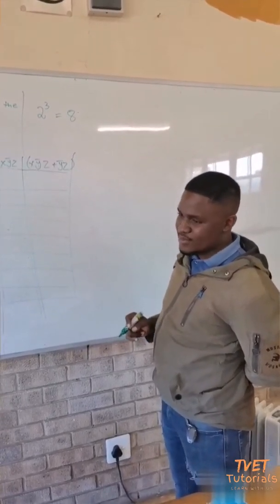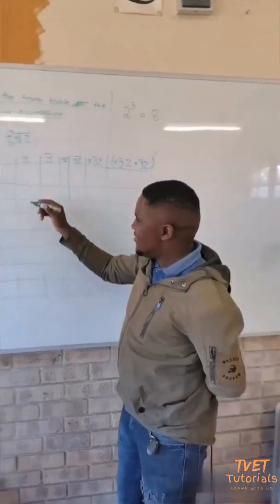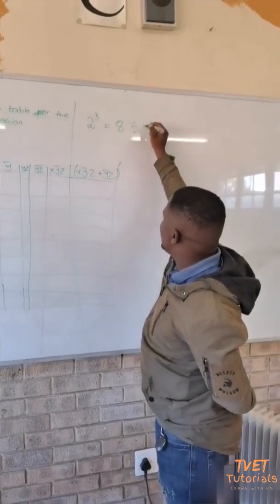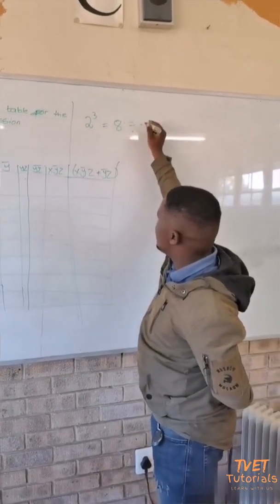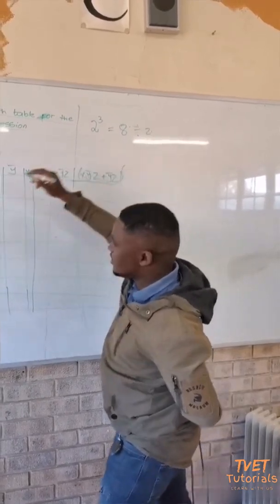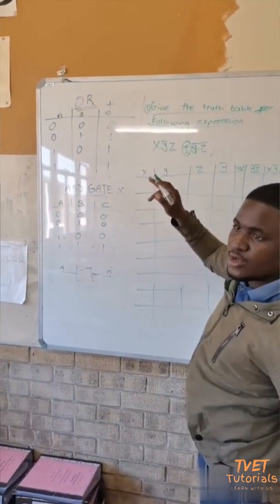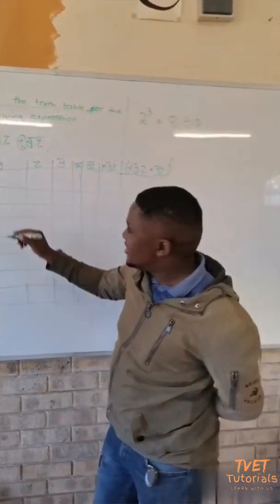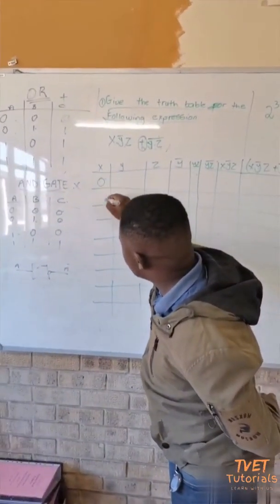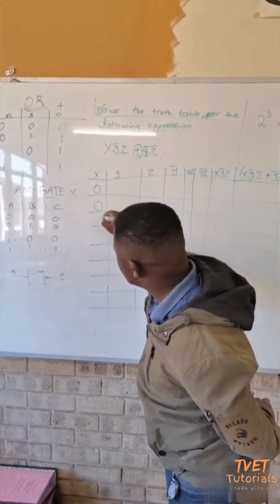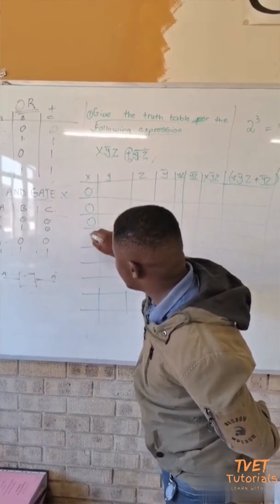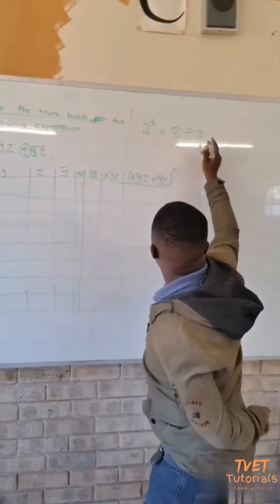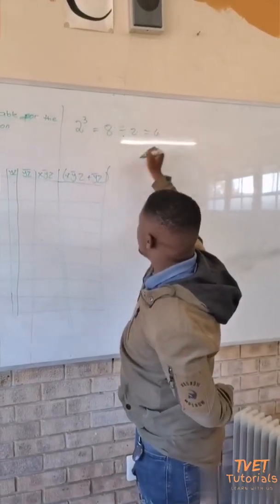We will use the half-to-half method. Since we are having eight rows, we divide by half to get four. That means we put four zeros — zero, zero, zero, zero — then four ones — one, one, one, one — for our first input column X.